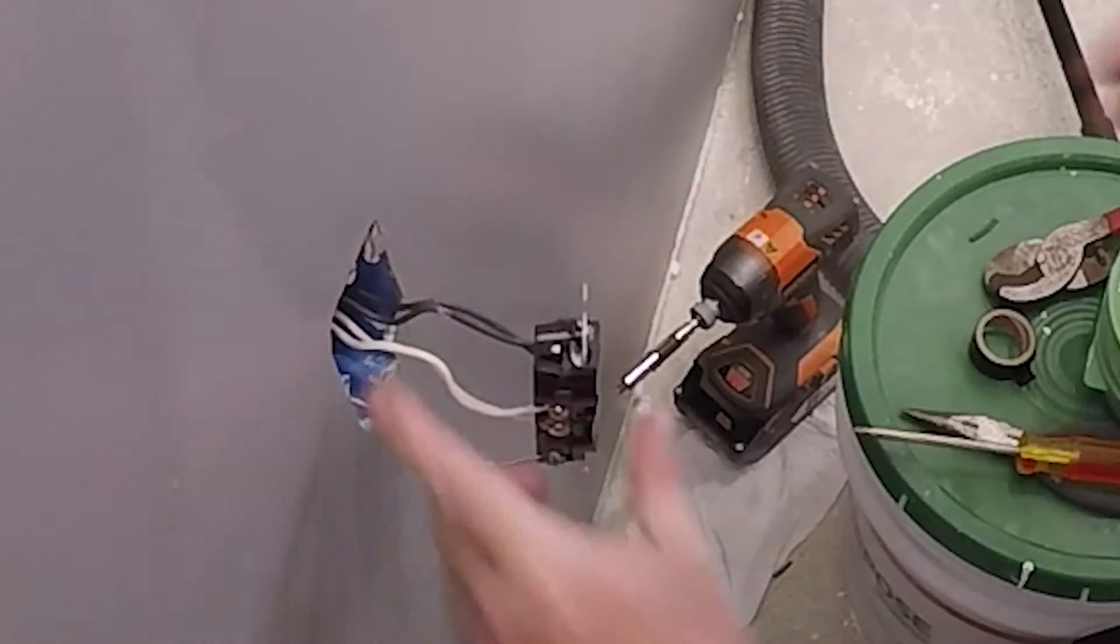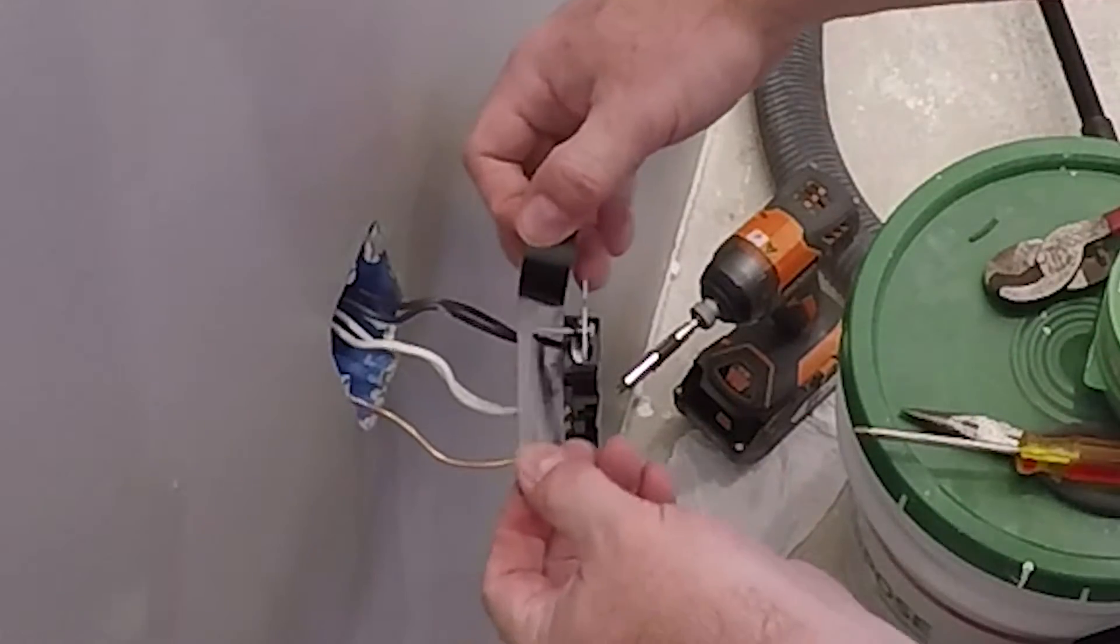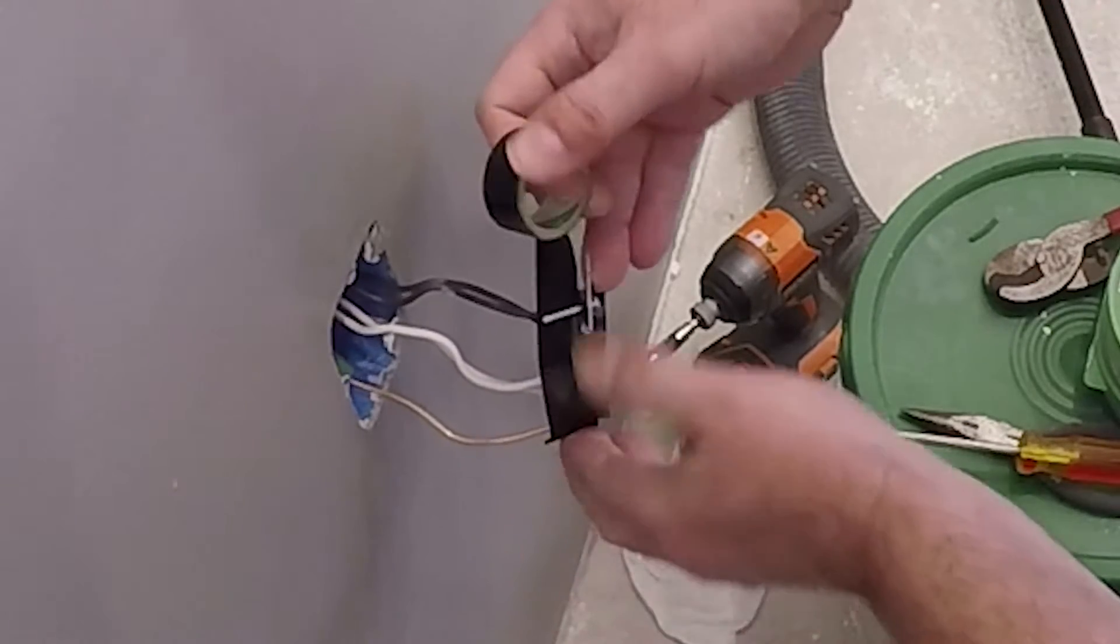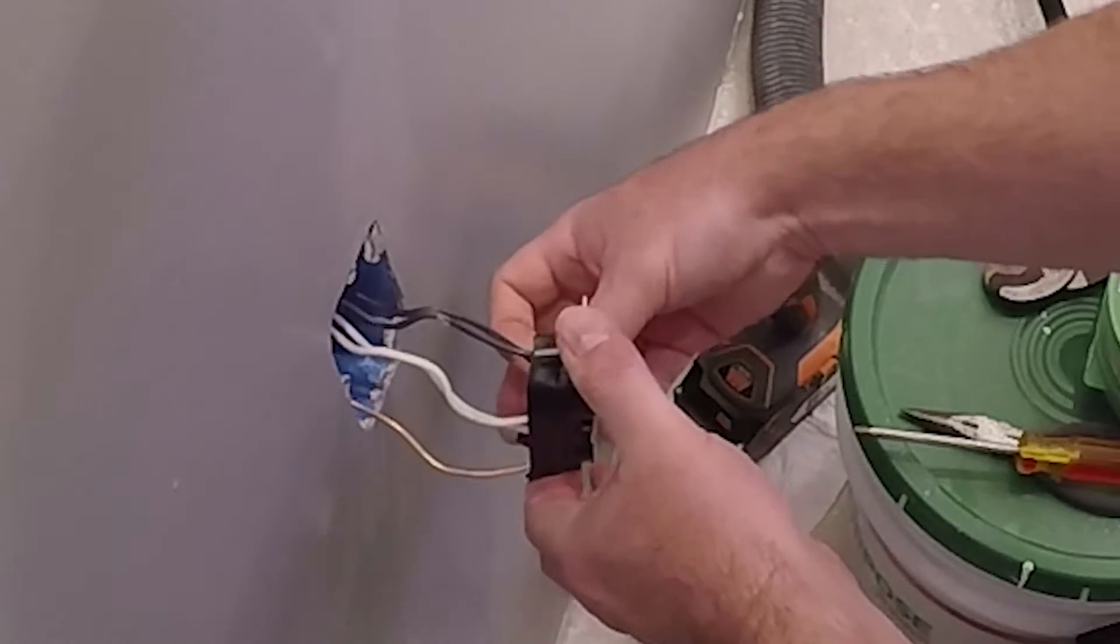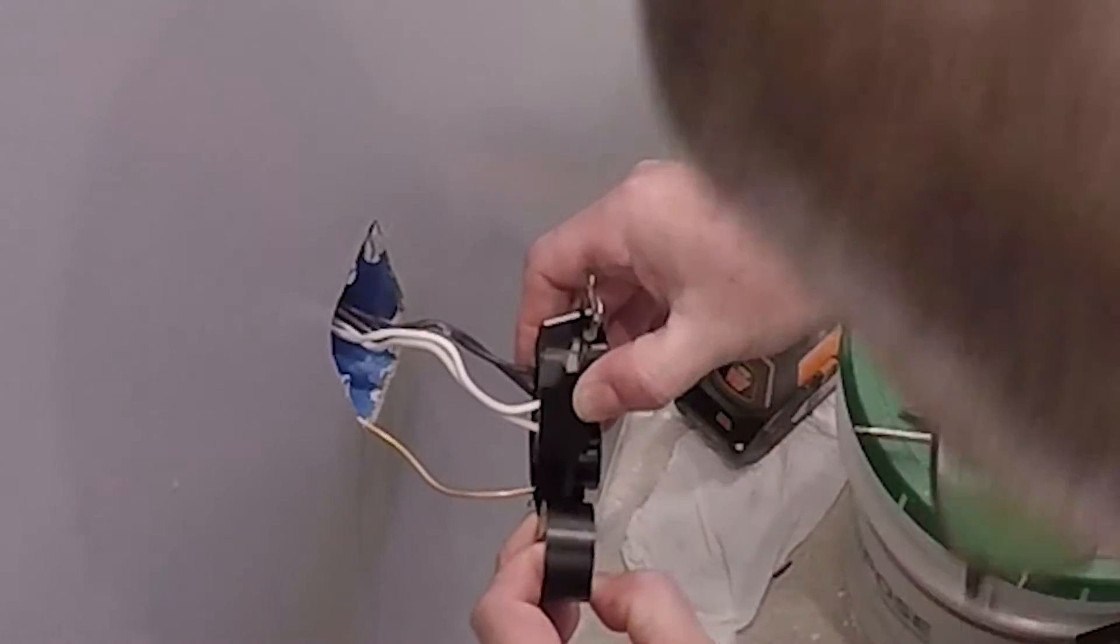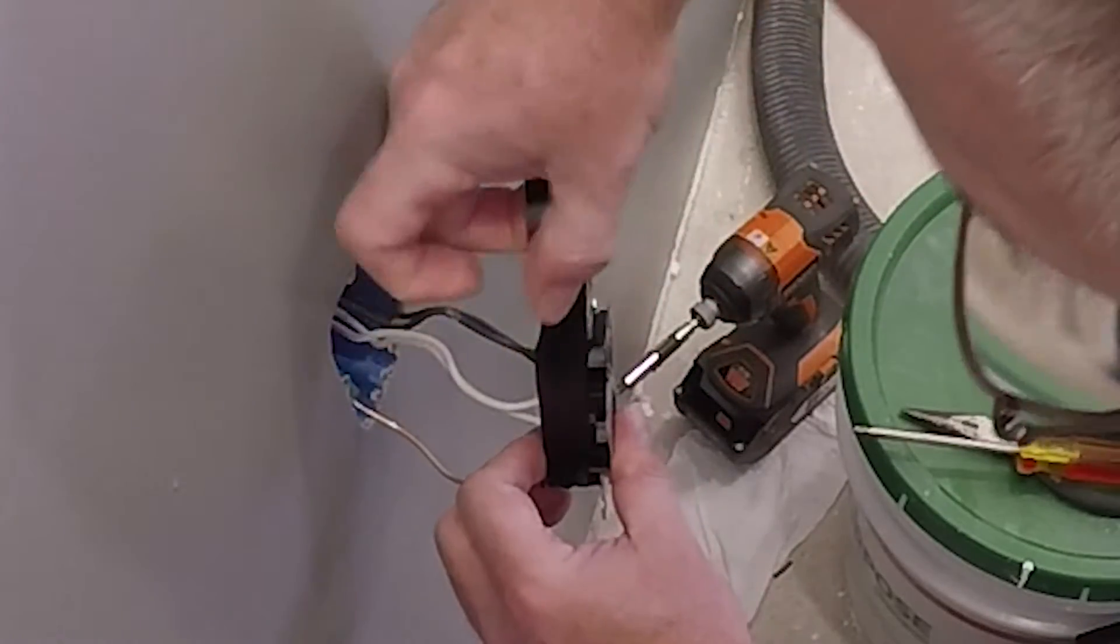Now this is 12 gauge wire used for a 20 amp circuit, so that's why it's a little bit beefier and bigger than 14 gauge. A safety note: wrap the outlet with at least two layers of electrical tape.